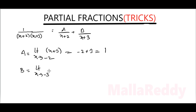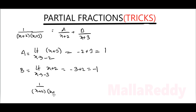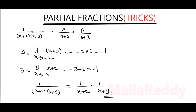B is found by limit x tends to minus 3, giving x plus 2 equals minus 3 plus 2 equals minus 1. Substituting A and B values: 1 by (x+2)(x+3) equals 1 by (x+2) minus 1 by (x+3). This is the answer.